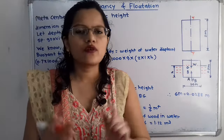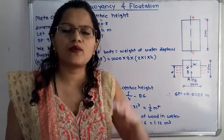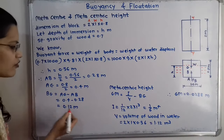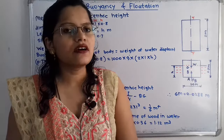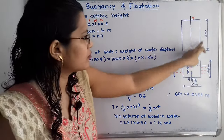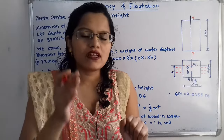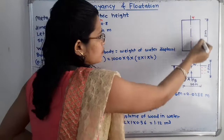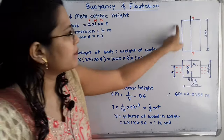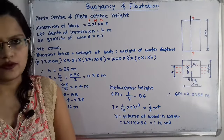Now we apply the metacentric height formula: GM = I/V − BG. Here I is the moment of inertia of the body about axis Y-Y. Since the shape is rectangular, I = (1/12) × b × d³ = (1/12) × 2 × 1³ = 1/6 m⁴. Note: for calculating I, we use the plan-view dimensions (length 2 m × width 1 m).